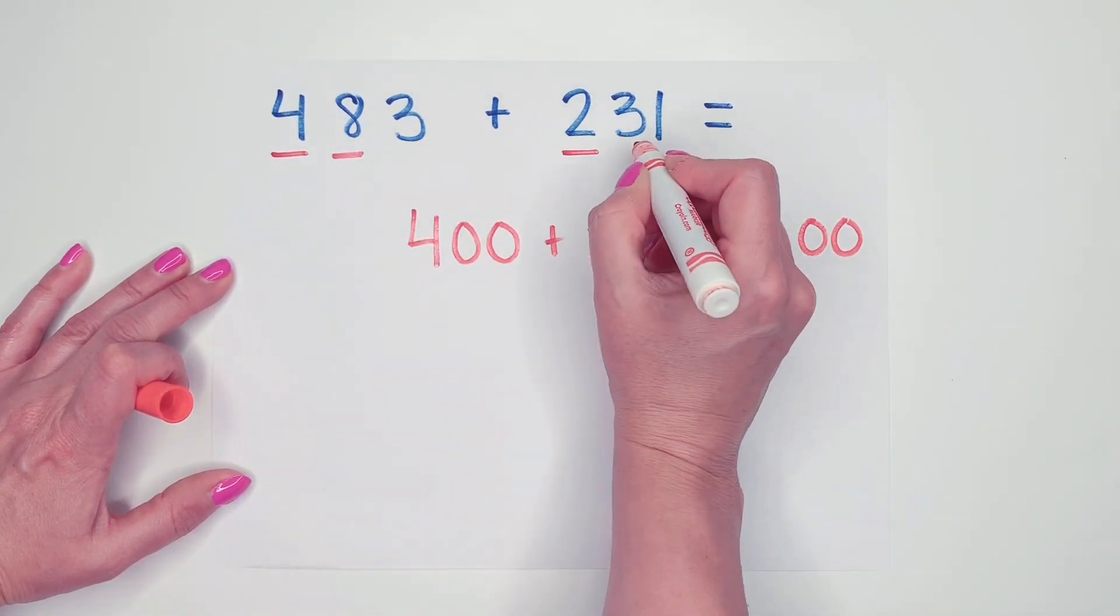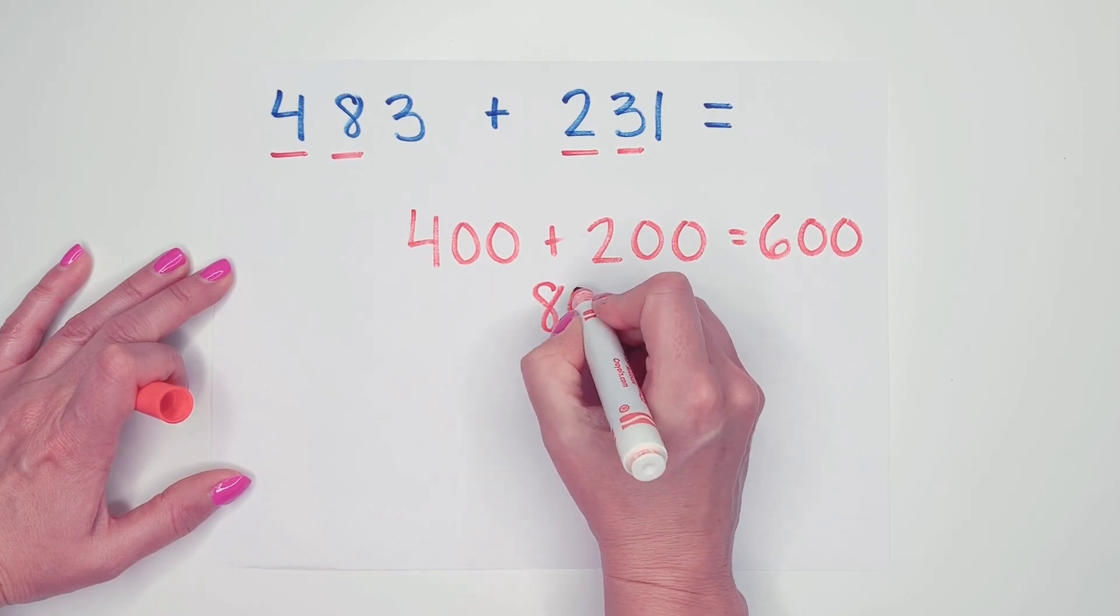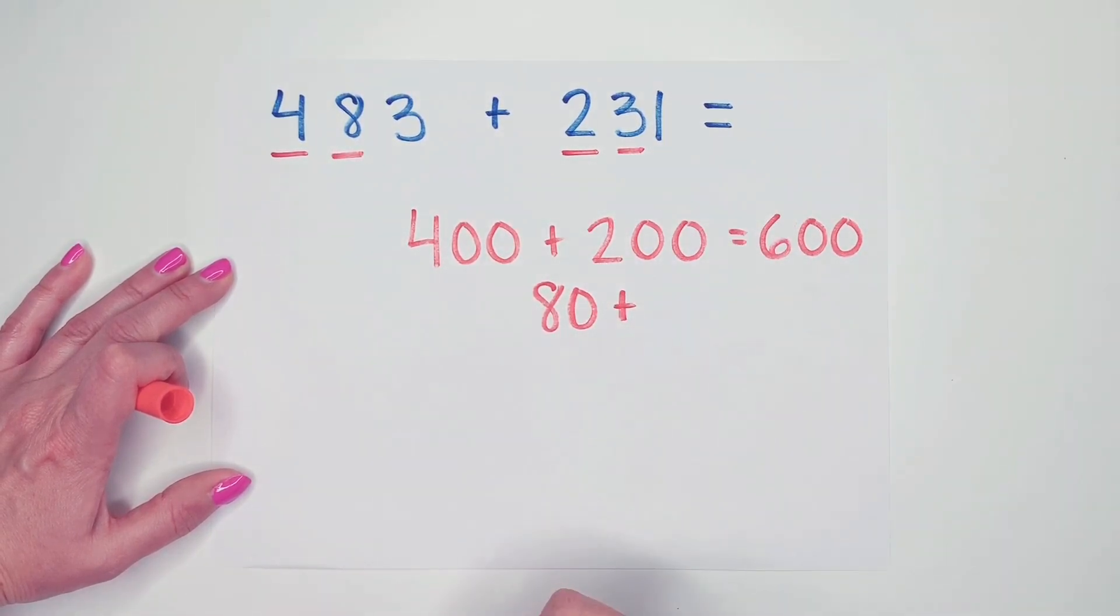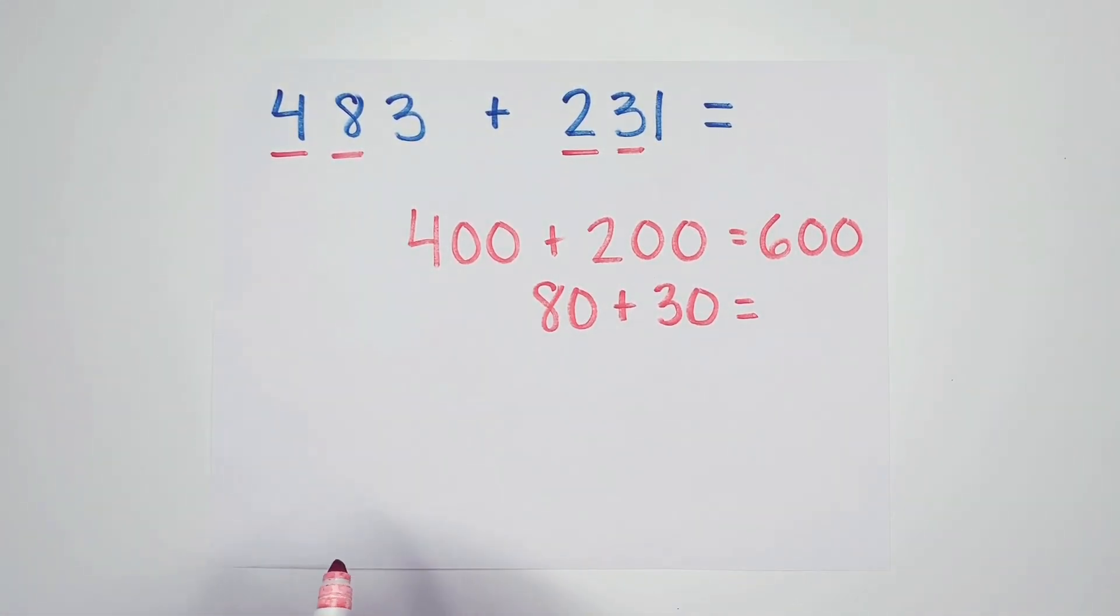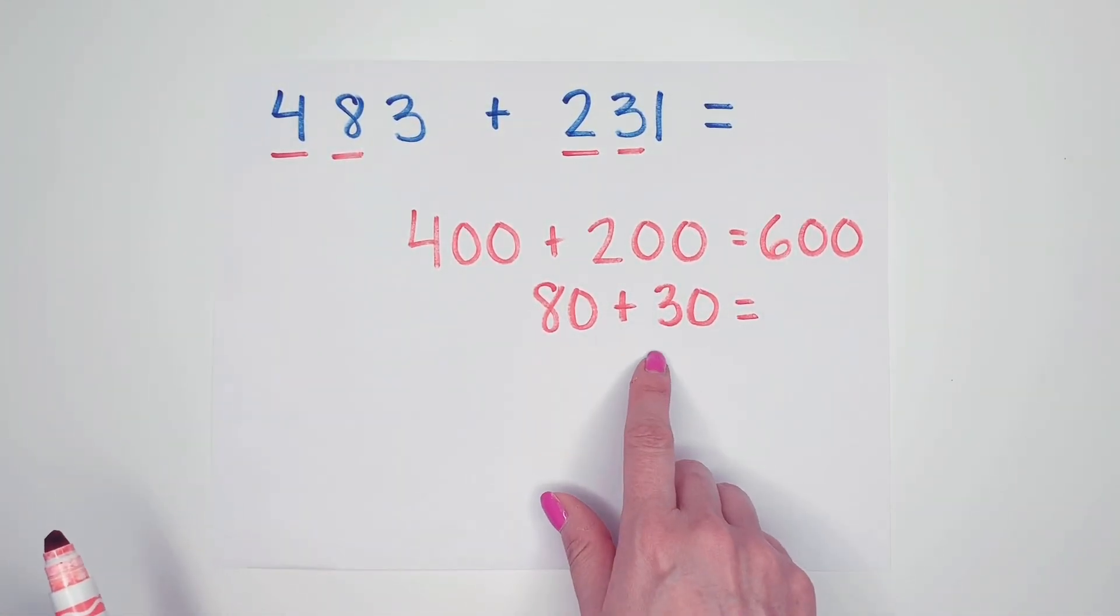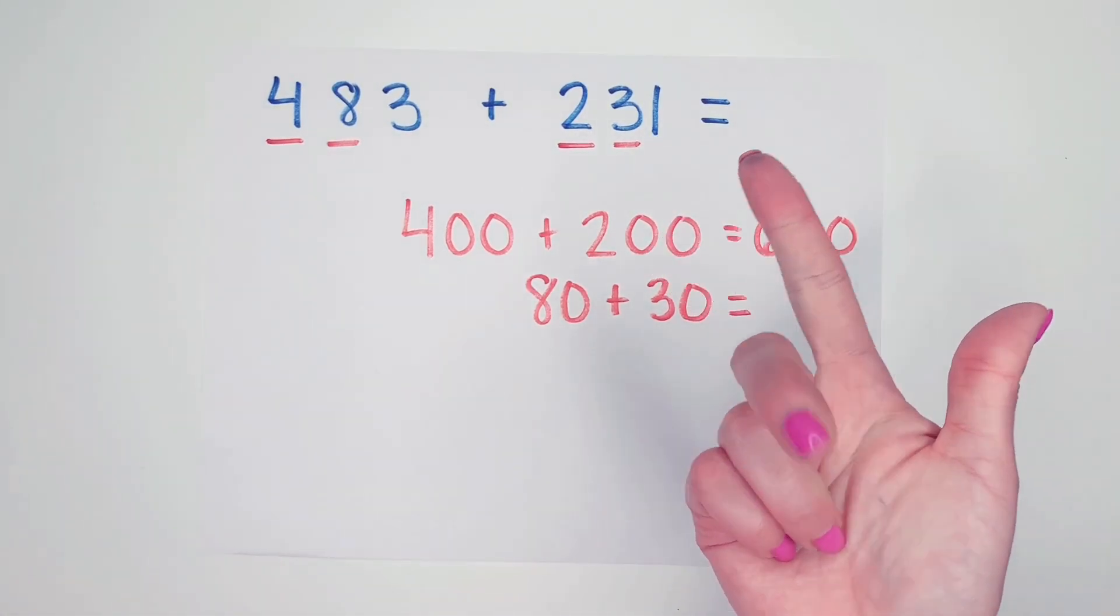Now let's move on to the tens. The value of the 8 is 80. And the value of the 3 is 30. So I'm going to put 80 in my head and I'm going to count by tens until I count 30. 80, 90, 100, 110.